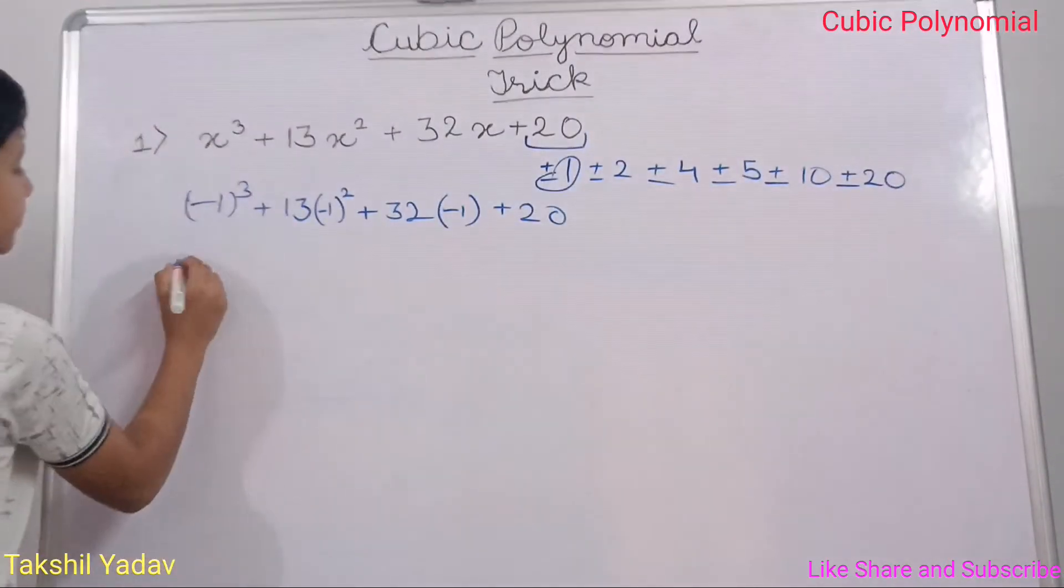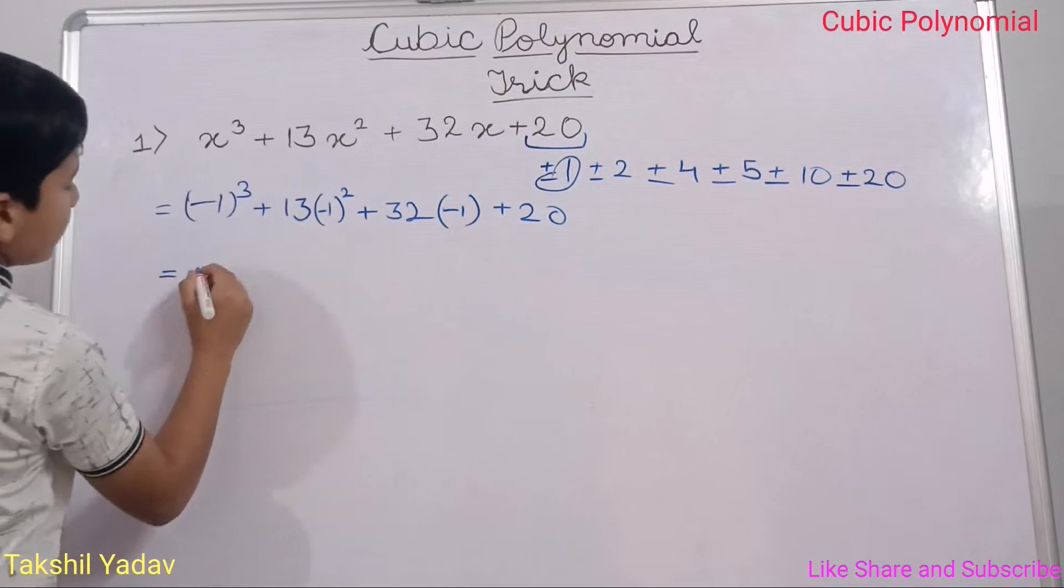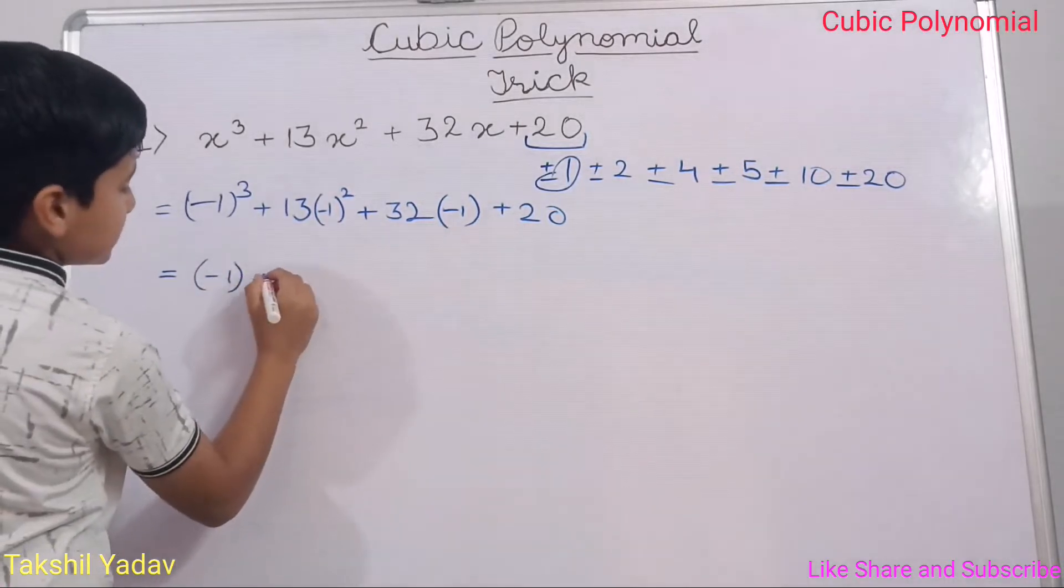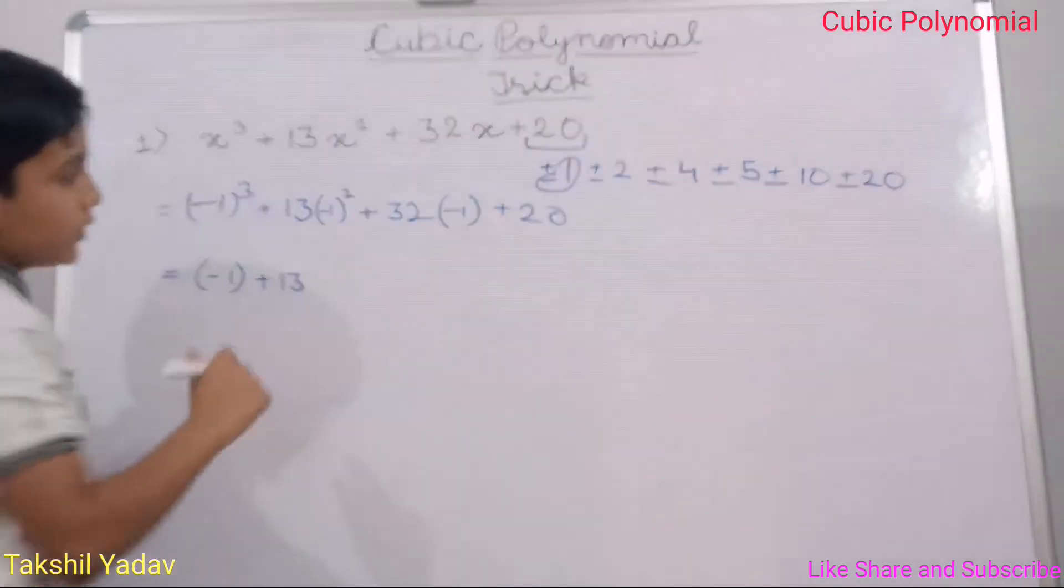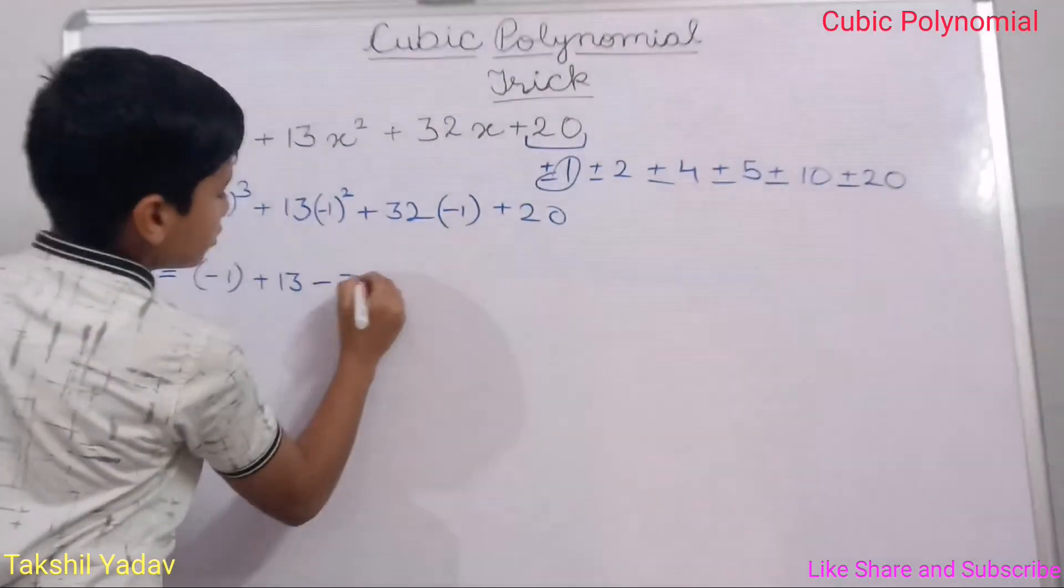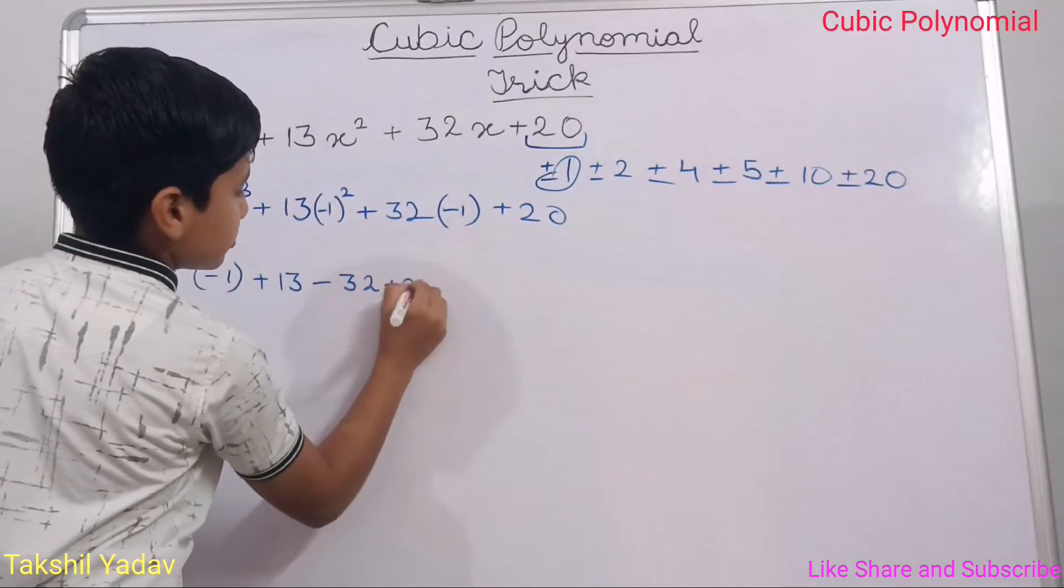Let's solve it. It is equal to minus 1, minus, sorry it is positive 13, as minus 1 square gives us 1, minus 32, and plus 20.